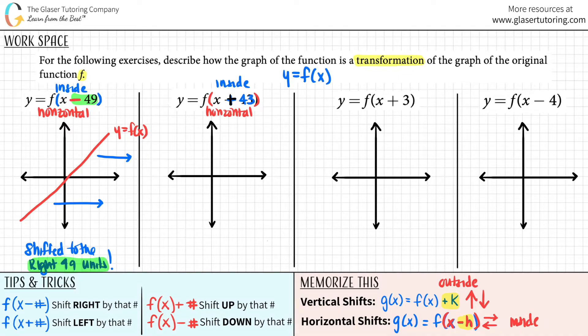But are we shifting to the left or to the right? Well, it's a plus sign. And for x plus a number, you are shifting to the left by that number. So we shift to the left. How many units? 43 units.